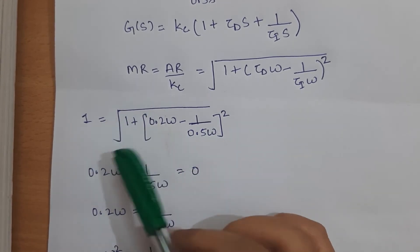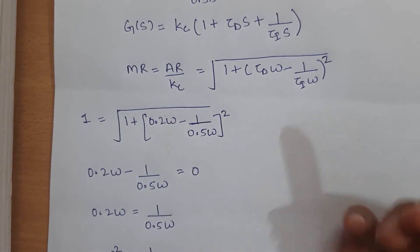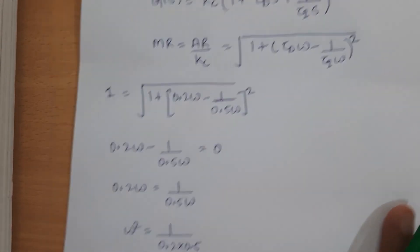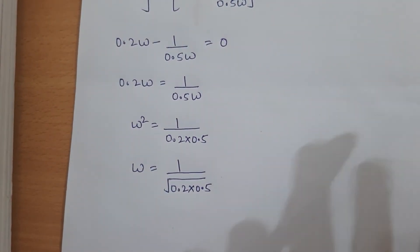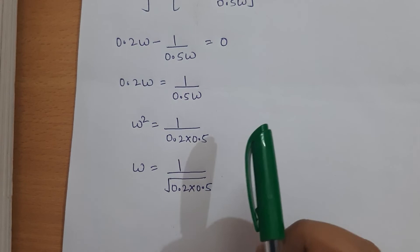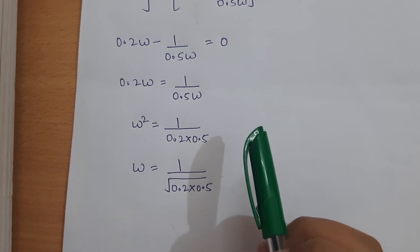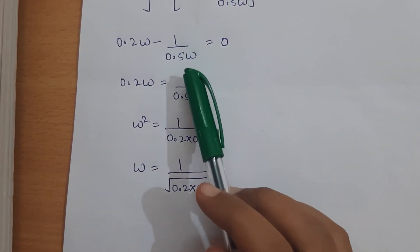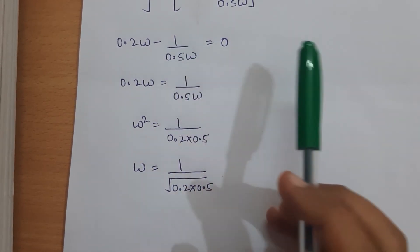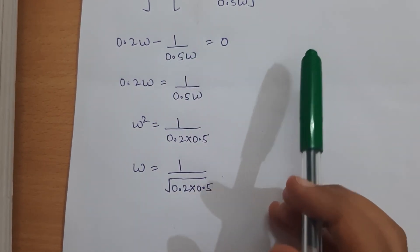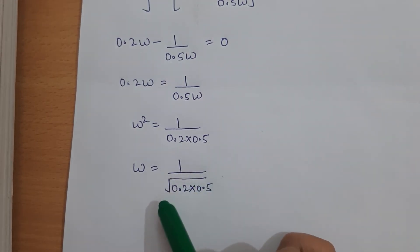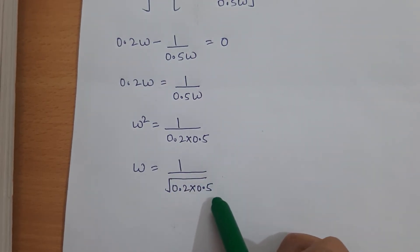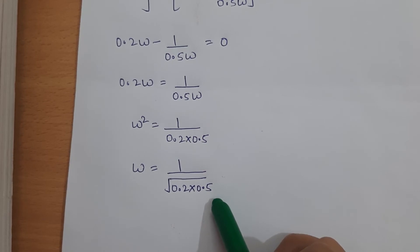Squaring and canceling terms, the frequency is found by moving 1/(0.5ω) to the RHS, giving ω = 1/√(0.2 × 0.5).